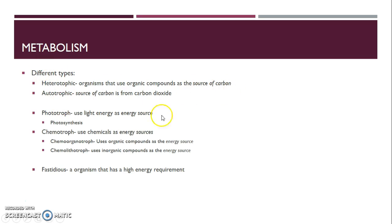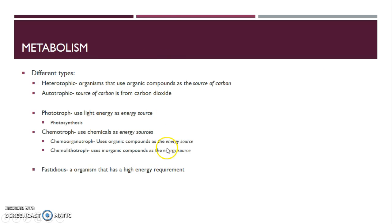Plants are autotrophic and phototrophs — they use carbon dioxide as a source of carbon and build energy using photosynthesis, which uses light energy to fix those carbons into sugar. There's also the term fastidious, which describes an organism that has a high energy requirement — if you need a lot of energy, then you are fastidious.